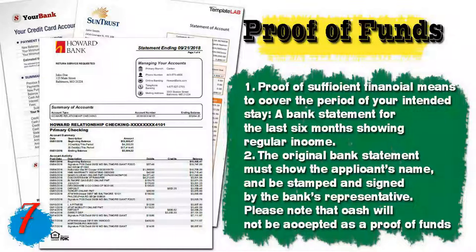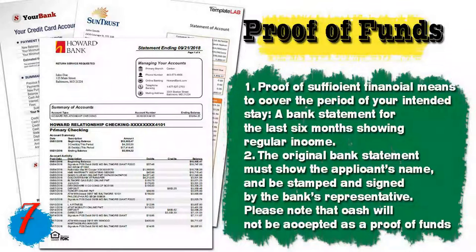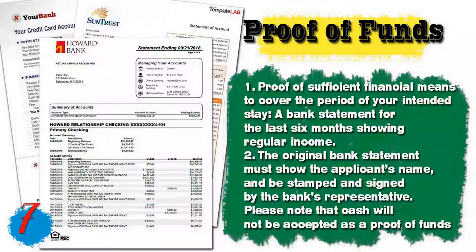Number seven, you will need proof of funds — sufficient financial means to cover your intended stay. Provide a bank statement for the last six months showing regular income. The original bank statement must show the applicant's name and be stamped and signed by a bank representative. Cash will not be accepted. If you don't have a bank account, proof of any assets can be presented.